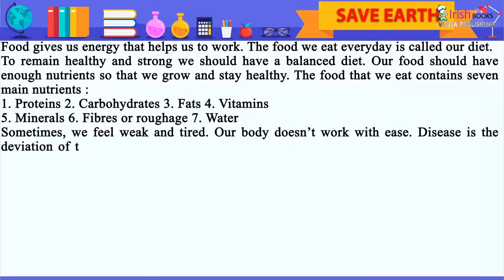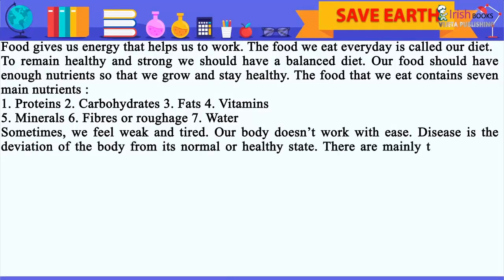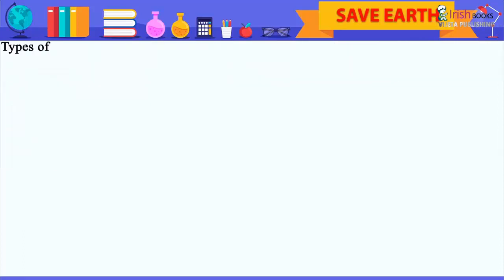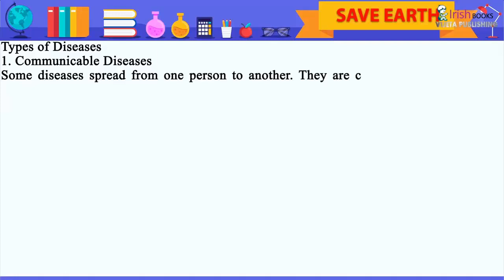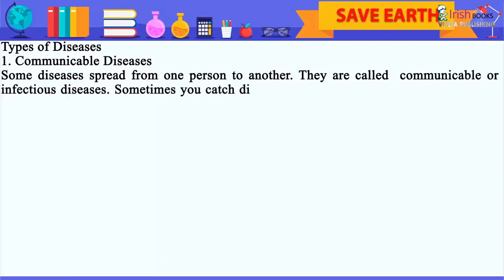Sometimes we feel weak and tired and our body doesn't work with ease. Disease is the deviation of the body from its normal or healthy state. There are mainly two types of diseases. The first type is communicable diseases - some diseases spread from one person to another and are called communicable or infectious diseases.